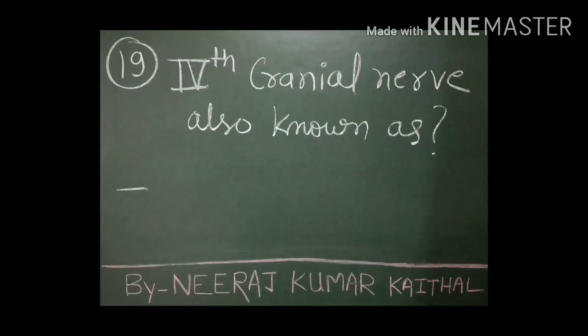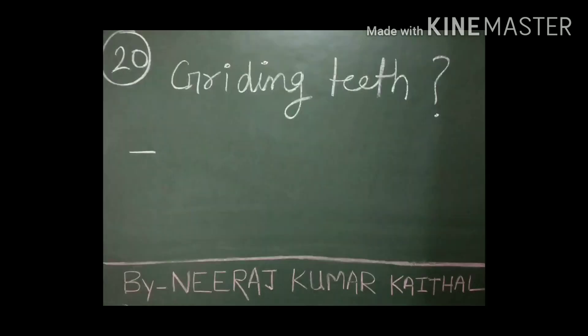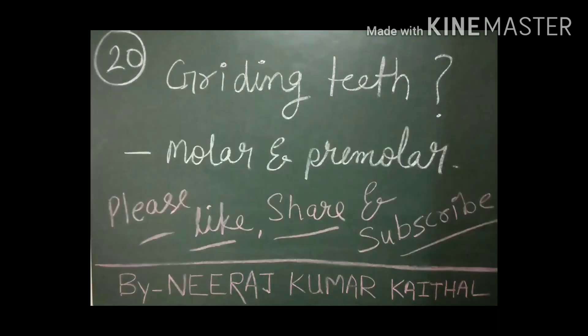The fourth cranial nerve is also known as the trochlear nerve. Which teeth are known as grinding teeth? Molar and premolar types of teeth are known as grinding teeth.